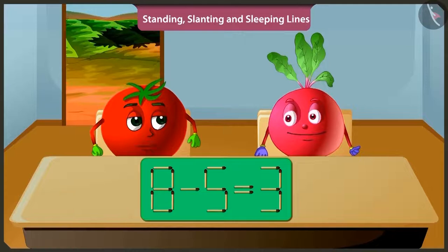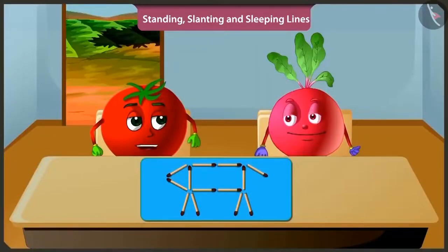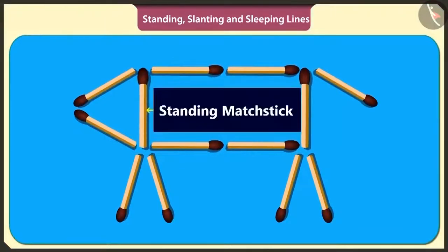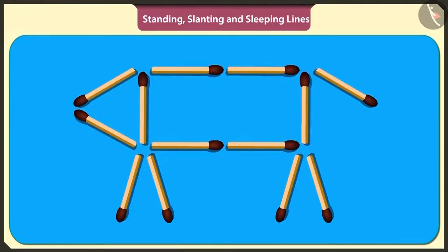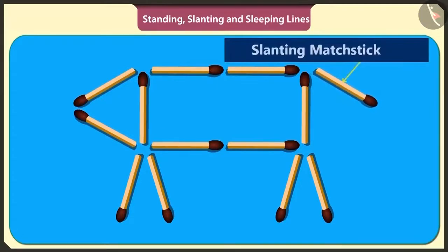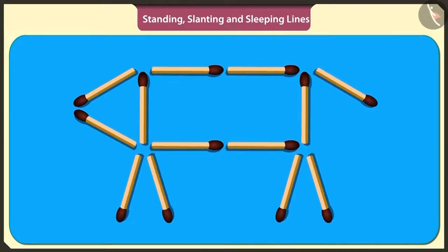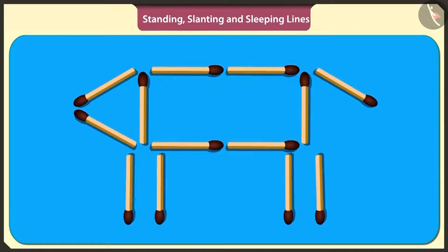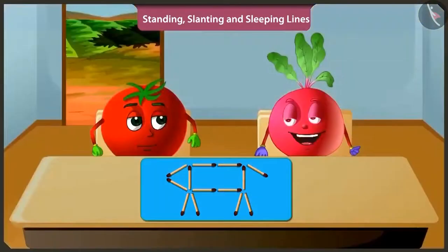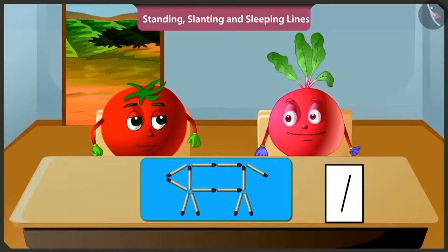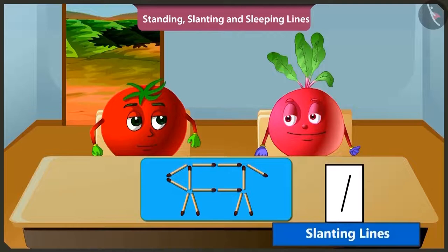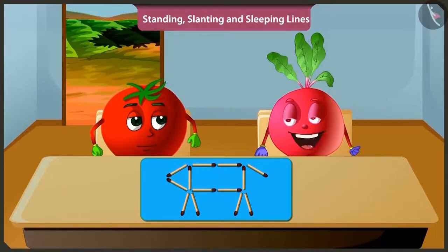Let's play another game. I have made a dog using matchsticks. We made the dog's tummy using four sleeping sticks and two standing sticks. The dog's face is made using two slanting sticks. To make the dog's tail, one slanting stick has been used. And four standing sticks have made the four legs of the dog. Hey, to make the legs of the dog, the matchsticks are not standing but slanting. Even if the line is slightly tilted, it is called slanting.